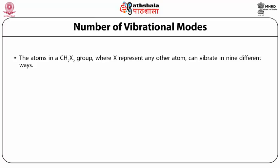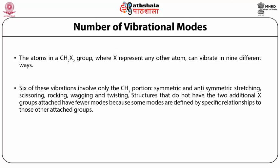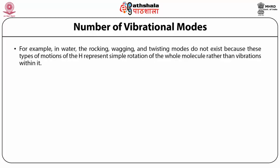The atoms in a CH₂X₂ group (where X represents any other atom) can vibrate in 9 different ways. Six of these vibrations involve only the CH₂ portion: symmetric and antisymmetric stretching, scissoring, rocking, wagging, and twisting. Symmetric structures without the two additional X groups have fewer modes because some modes are defined by specific relationships to those attached groups. For example, in water the rocking, wagging, and twisting modes do not exist because these motions of the hydrogen represent simple rotation of the whole molecule rather than vibrations within it.